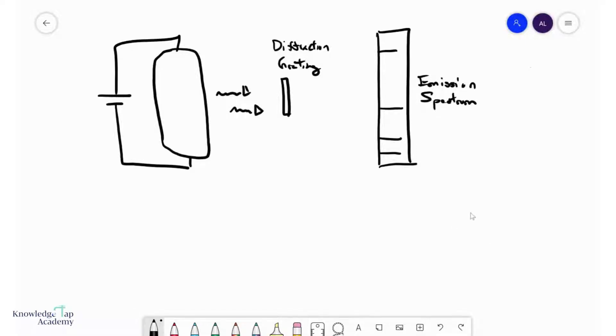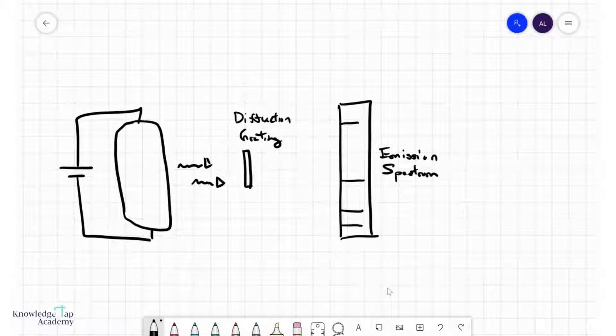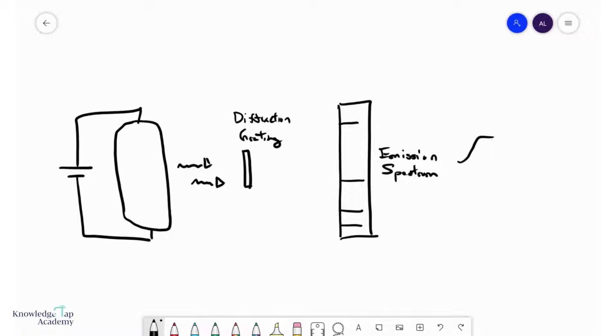We're going to talk about emission spectrums. First of all, what is an emission line spectrum? Well, it is a bunch of colored lines on a dark background. Imagine that this thing is dark and these lines over here are colored.